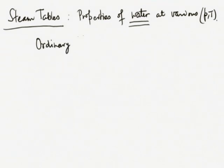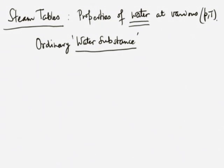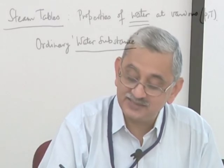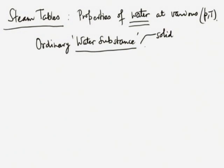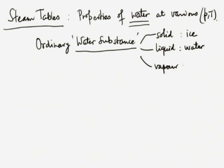We are talking about what is known as ordinary water substance. Water substance is the name given to what we call water in any of its phases. Generally, if we see a solid we call it ice, if we see liquid we call it water, if we see vapour we call it steam. Water substance is the name given to all three phases together so we do not have to use three different words. So water substance includes the solid phase (ice), the liquid phase (water), and the vapour phase (steam).